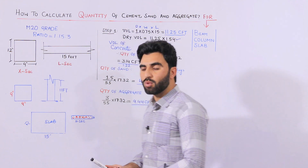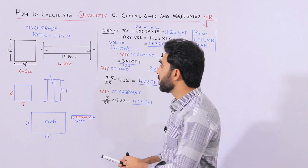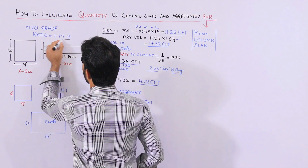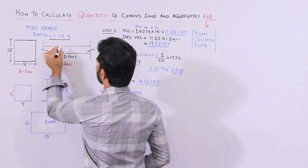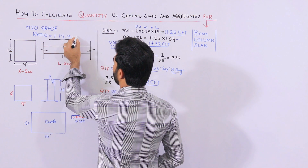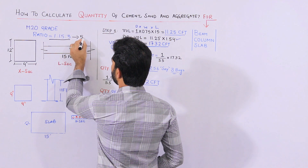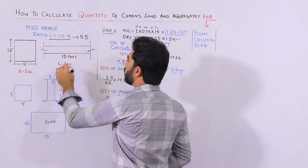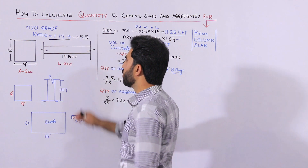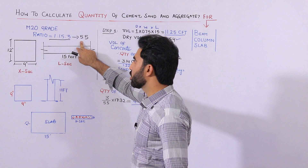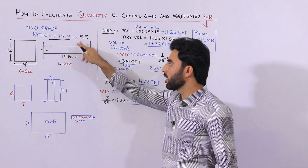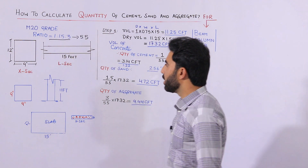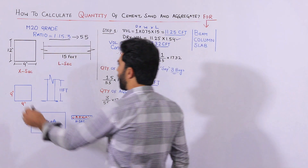We will use M20 grade concrete, which has a ratio of 1:1.5:3. The sum of the ratio becomes 5.5. Using this ratio, we will find the estimation of cement, sand, and aggregate. The first member is the beam.